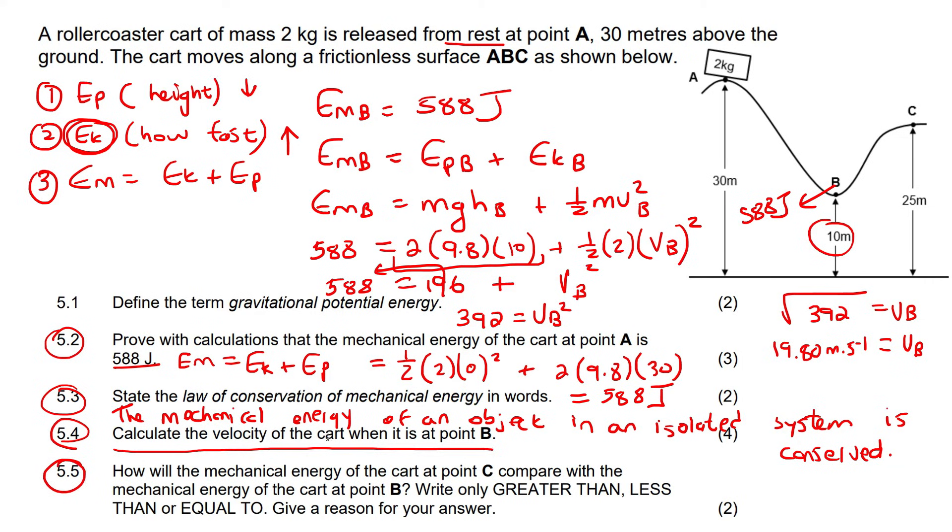And then, this last one says, how will the mechanical energy of the cart at point C compare with the mechanical energy at point B? It will be exactly the same. So, we're going to say here, same, or so, they said equal to. So, we're going to say equal to. And then, just say mechanical energy is conserved. Mechanical energy is conserved. Remember, guys, in grade 10, mechanical energy does not change, no matter where the object is. All that happens is the potential energy changes and the kinetic energy changes. For example, I told you that as you go down here, what will happen to the potential? It will become less, because your height is decreasing. But what will happen to your kinetic? It will go up, because you're speeding up. But then, when you go from B to C, well, now, all of a sudden, the object is going uphill. So, what would happen to its potential energy? Well, that will begin to increase again, because the height is increasing. But what will happen to the speed? Well, if you're going up a hill, your object is going to start slowing down. So, your potential energy would go up, but your kinetic energy would go down. But guess what? Your total will always be 588.